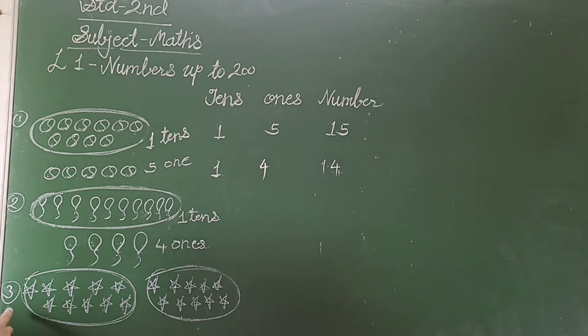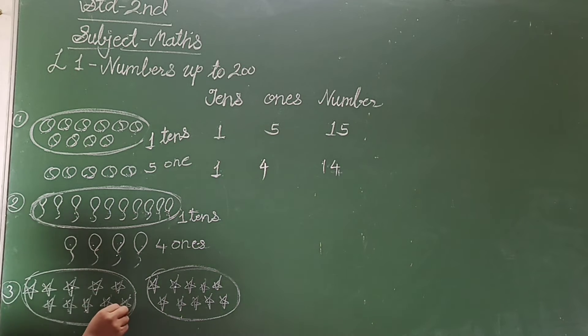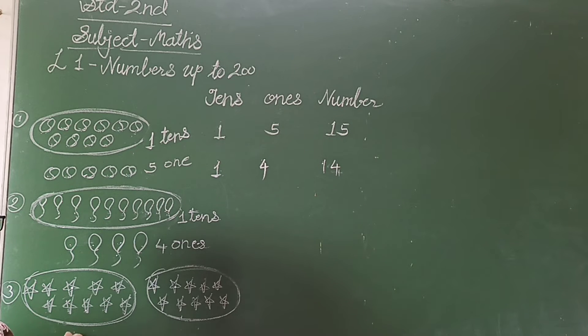Then next example is here I have 10 stars. Count it 1, 2, 3, 4, 5, 6, 7, 8, 9, 10. I have 10 stars. That means I have one bundle of 10 stars. Means 1, 10.